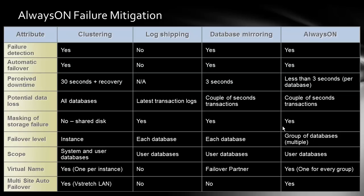In terms of scope, clustering covers both system and user databases, while log shipping, mirroring, and Always On cover only user databases. The key difference is that in clustering, new users or databases created automatically get failed over, whereas in log shipping, mirroring, and Always On you have to reconfigure every time you add a database.